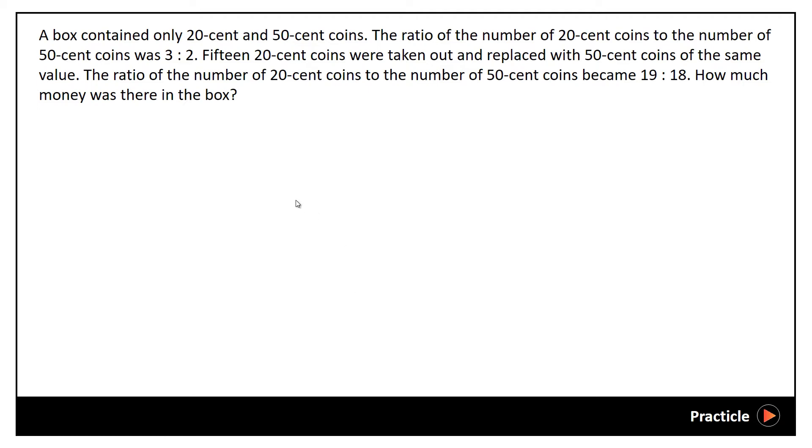Hi guys, so let's look at this question. A box contained only 20 cent and 50 cent coins. The ratio of the number of 20 cent coins to the number of 50 cent coins was 3 is to 2. So this is what we know.